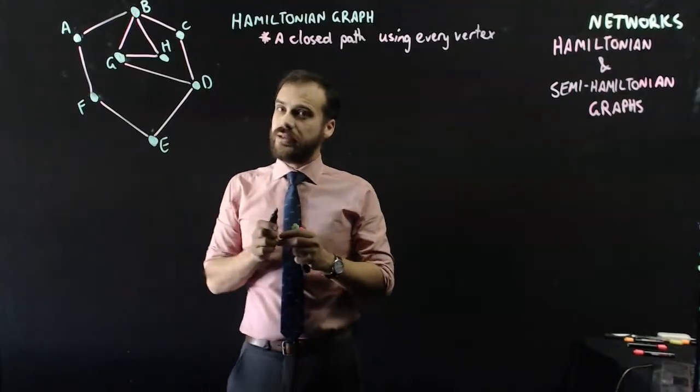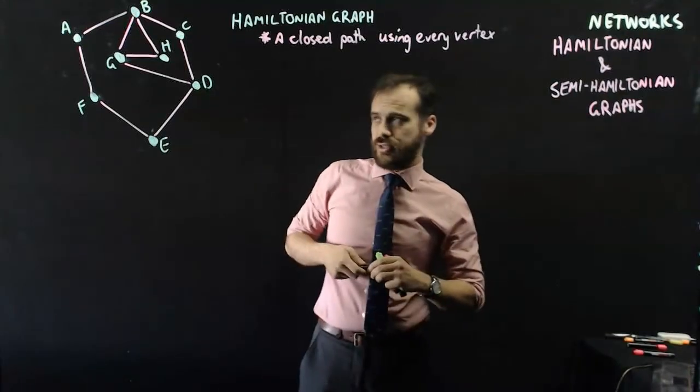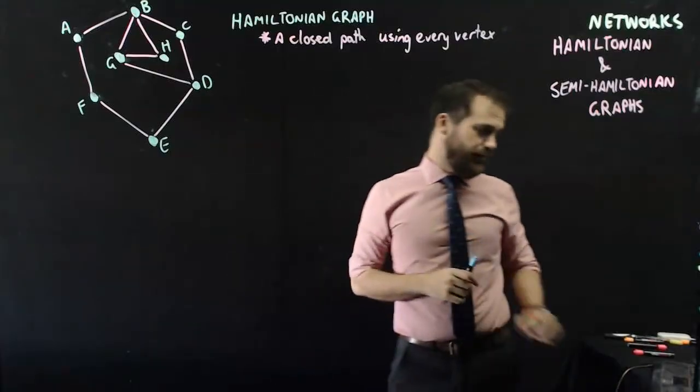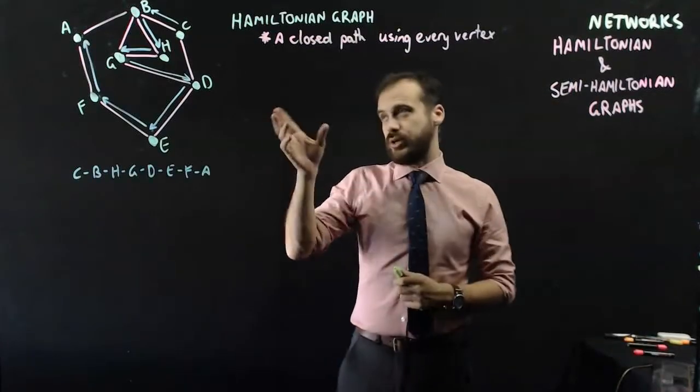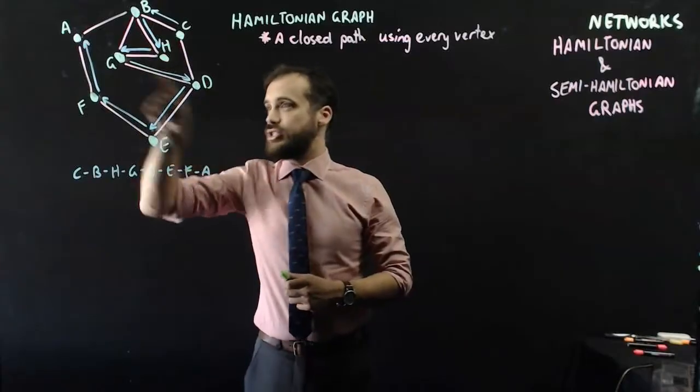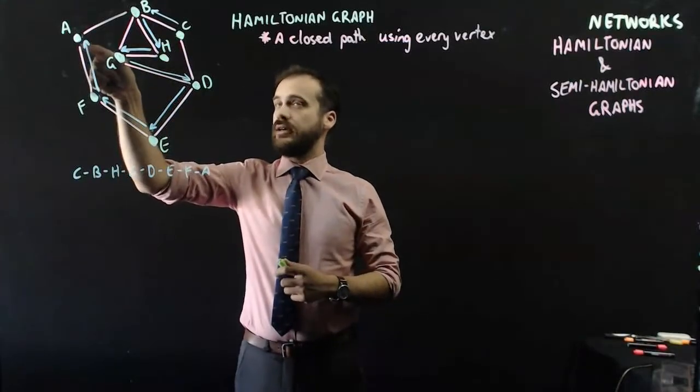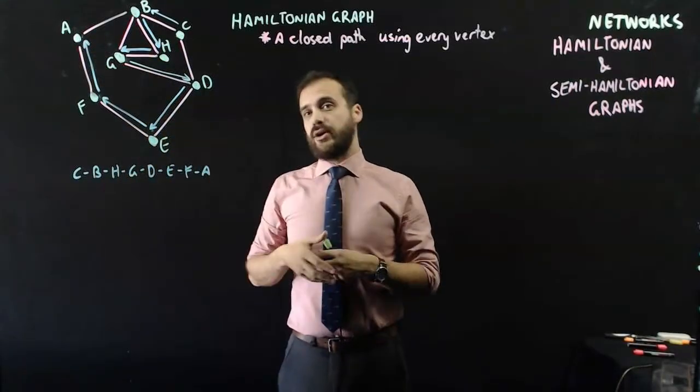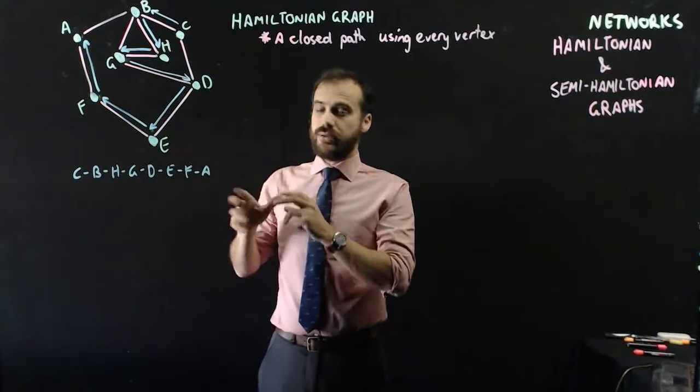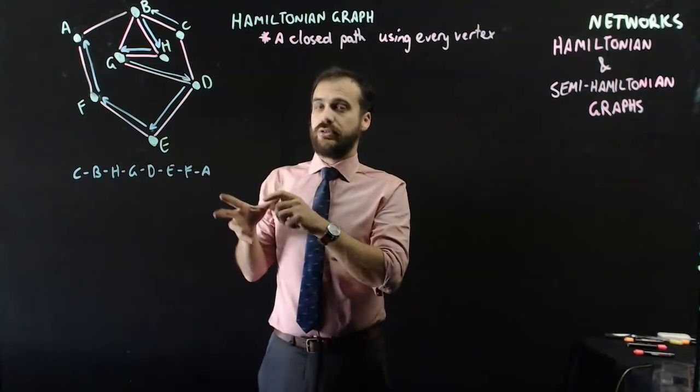Now, that might be the best I can do here. So let's try drawing that in for a second. All right, so that's my path. C, B, H, G, D, E, F, A. I didn't get back home. So this, at the moment, this might not be a Hamiltonian graph.